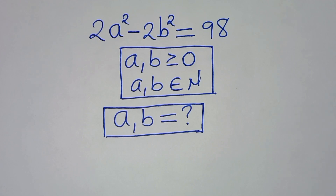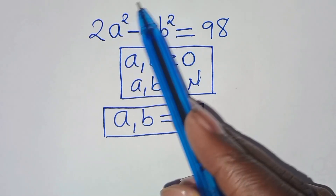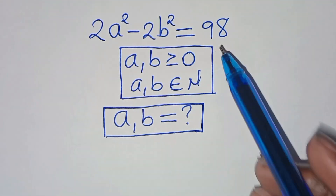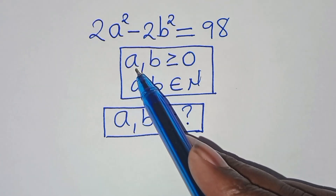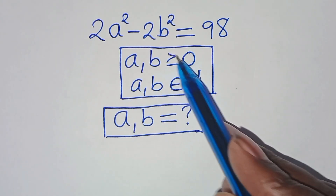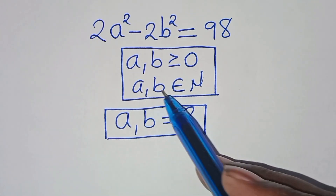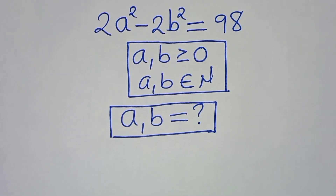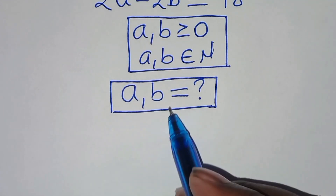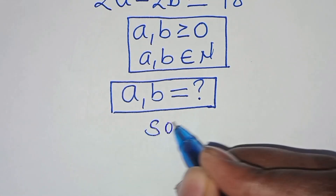Hello everyone, welcome to solve this nice algebra problem: 2a² minus 2b² is equal to 98, given that a and b are greater than or equal to zero and that a and b are elements of natural numbers. What is the value of a and b? Let's present the solution from here.